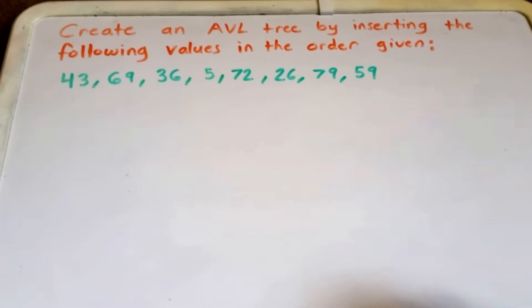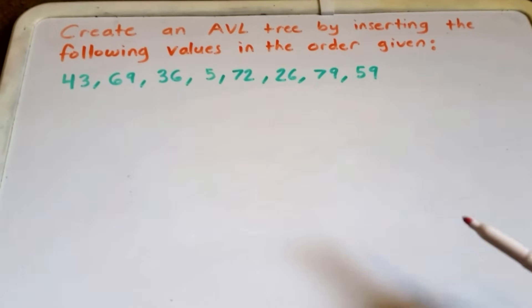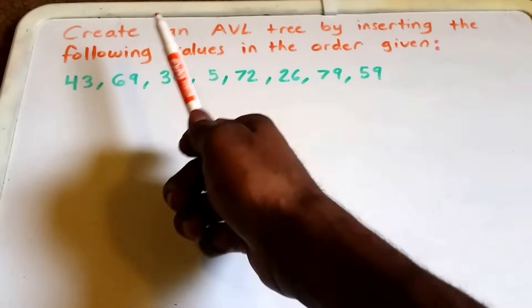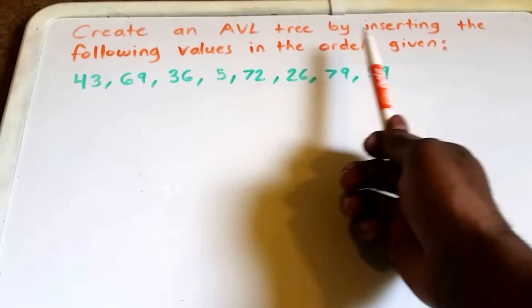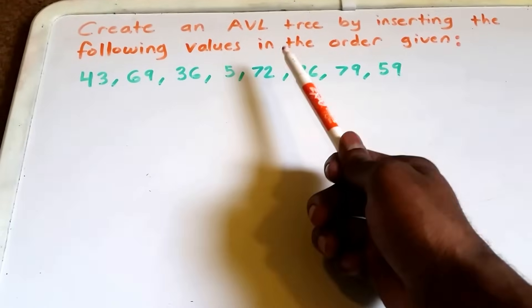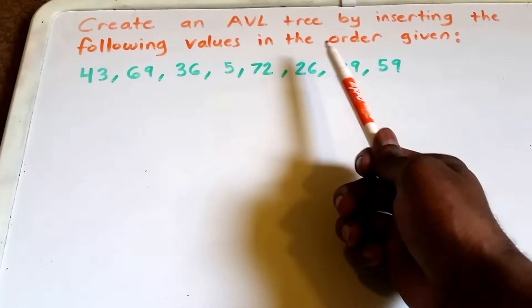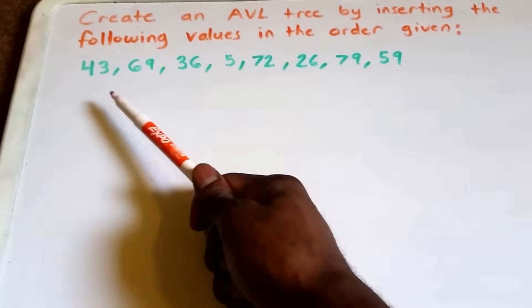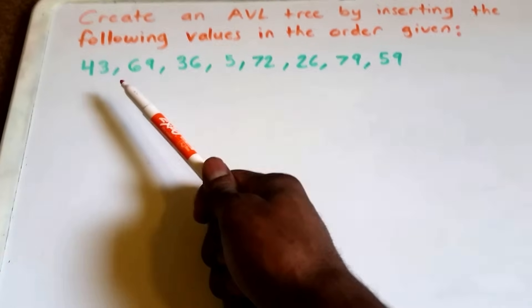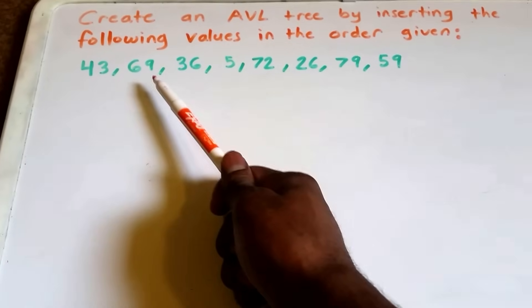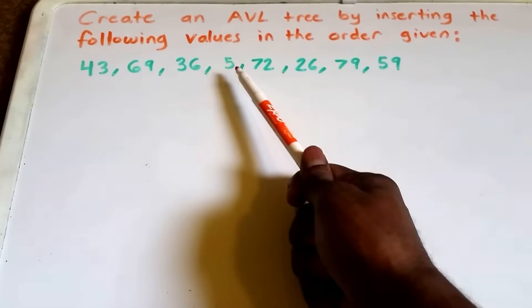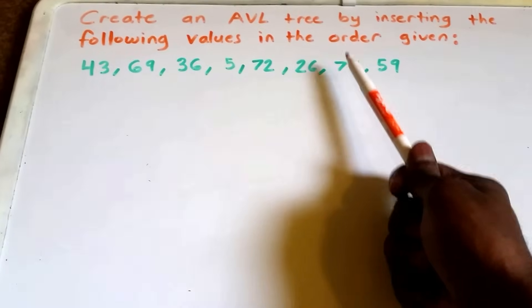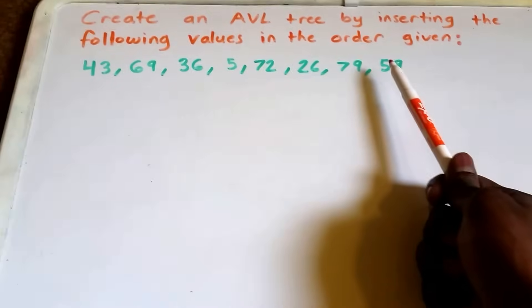Welcome to this video on AVL insertion. Here we have our problem: create an AVL tree by inserting the following values in the order given. The values, shown here in green, are 43, 69, 36, 5, 72, 26, 79, and 59.